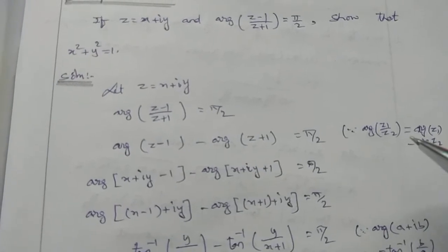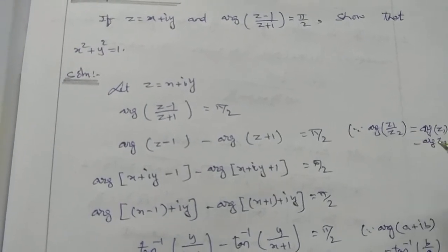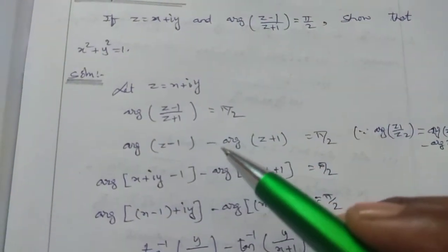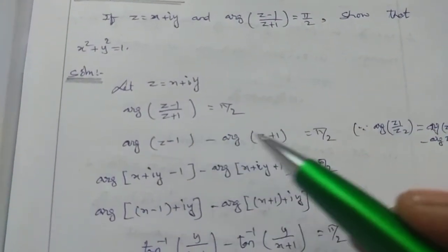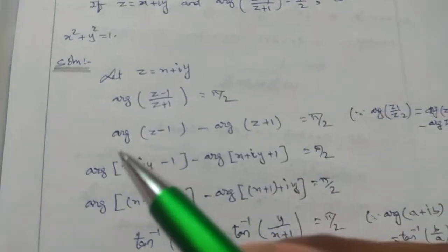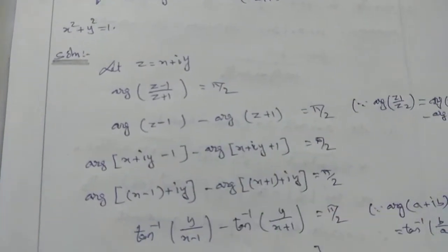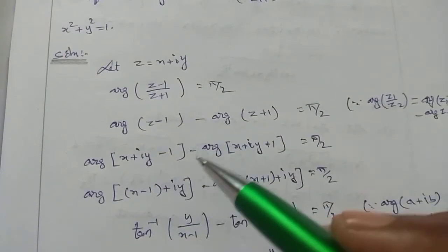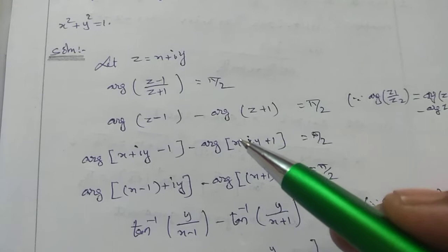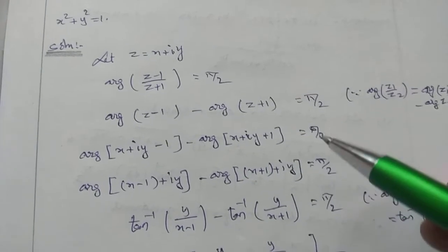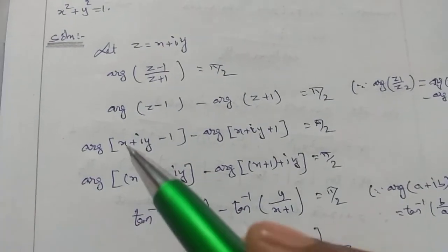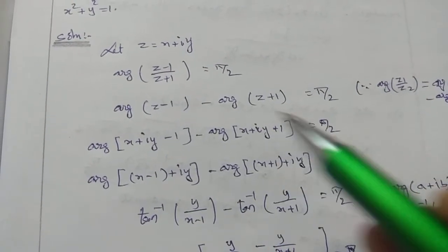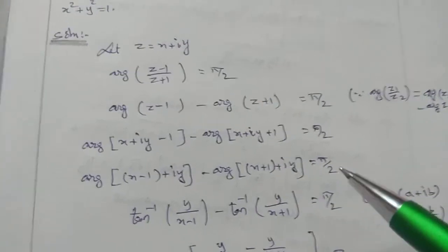Using the property: argument of z1 by z2 equals argument of z1 minus argument of z2. So, argument of (z minus 1) minus argument of (z plus 1) equals pi by 2. Substituting z equals x plus iy: argument of (x plus iy minus 1) minus argument of (x plus iy plus 1) equals pi by 2. This gives argument of (x minus 1 plus iy) minus argument of (x plus 1 plus iy) equals pi by 2.